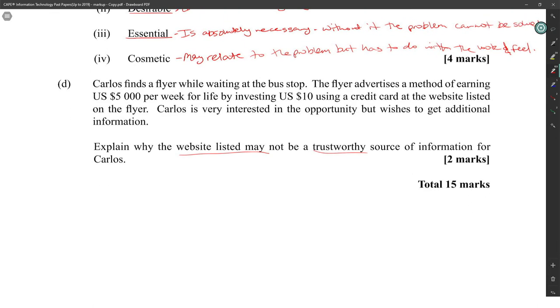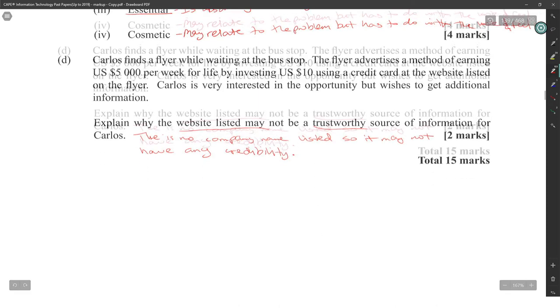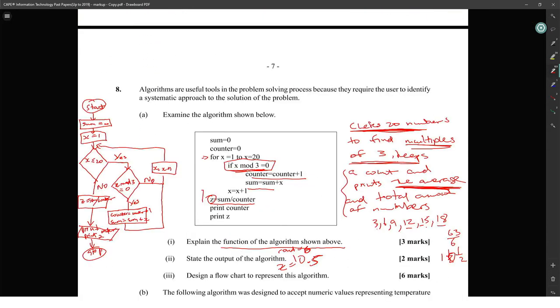Explain why the website listed may not be trustworthy. So how do you know the website may not be trustworthy? Because there is no company name listed, so it may not have any credibility. Credibility is the word you're looking for. No company listed is the issue.